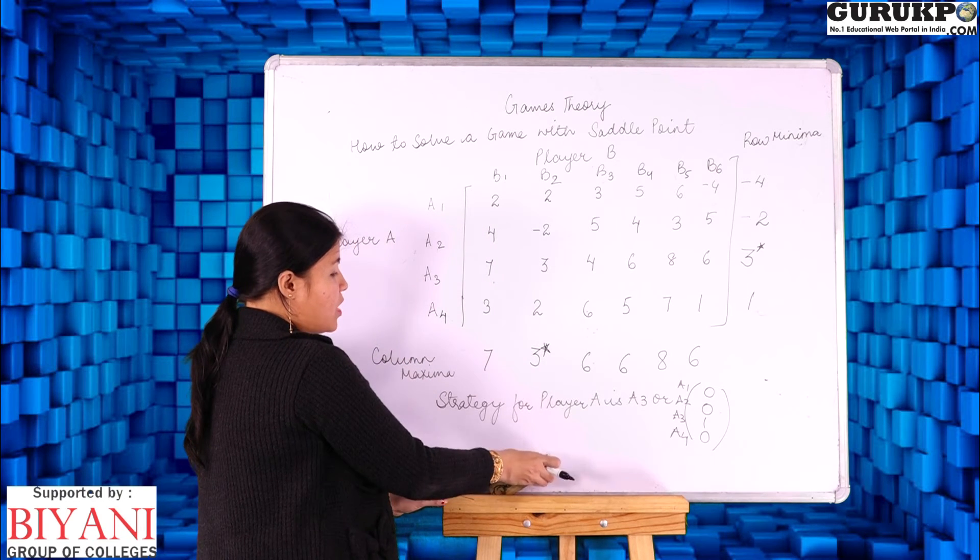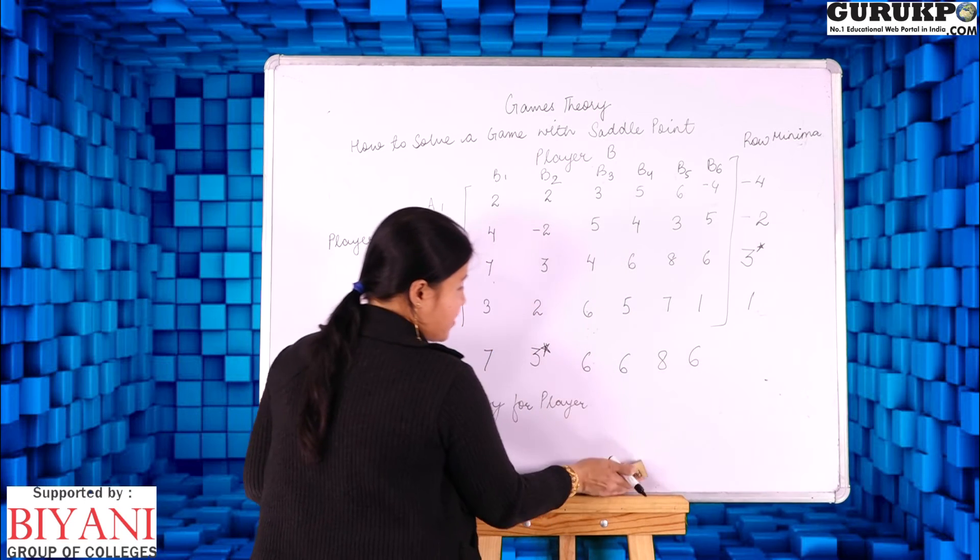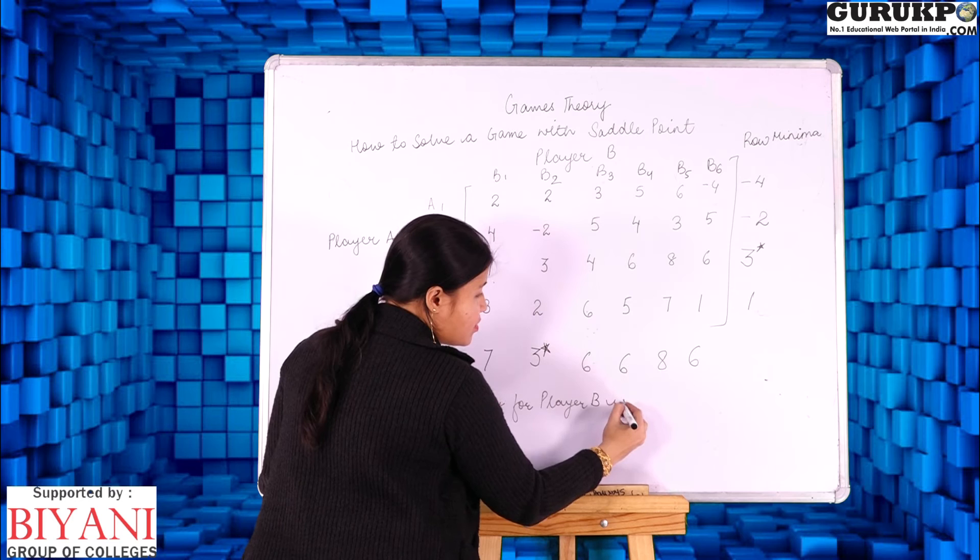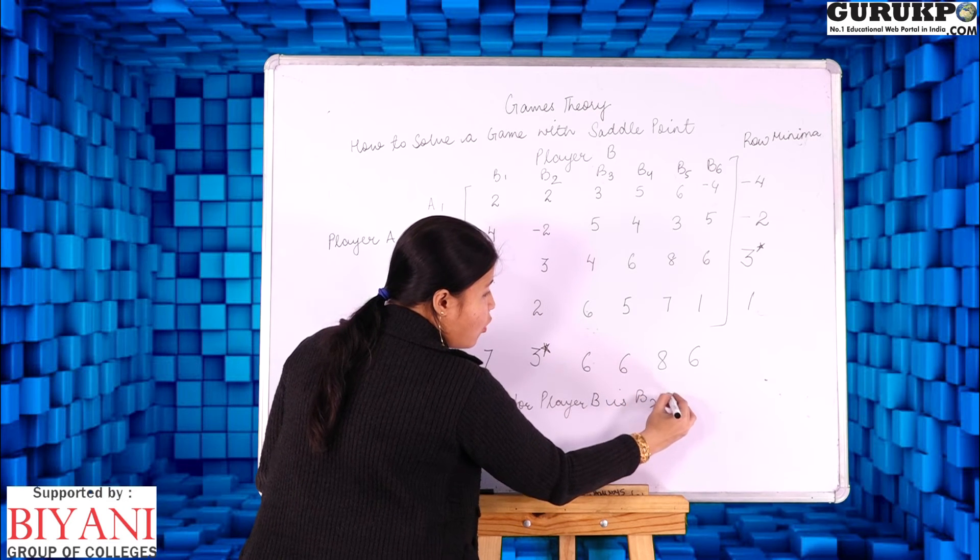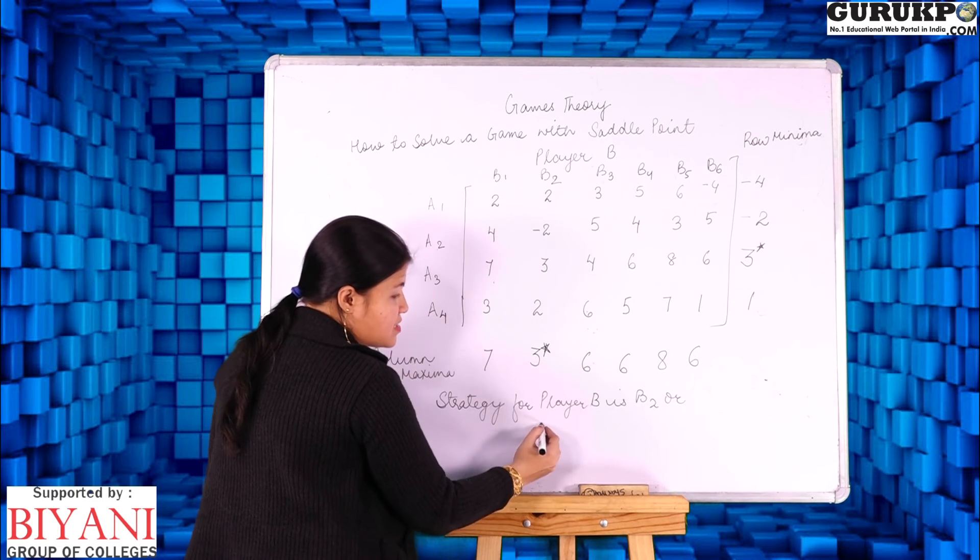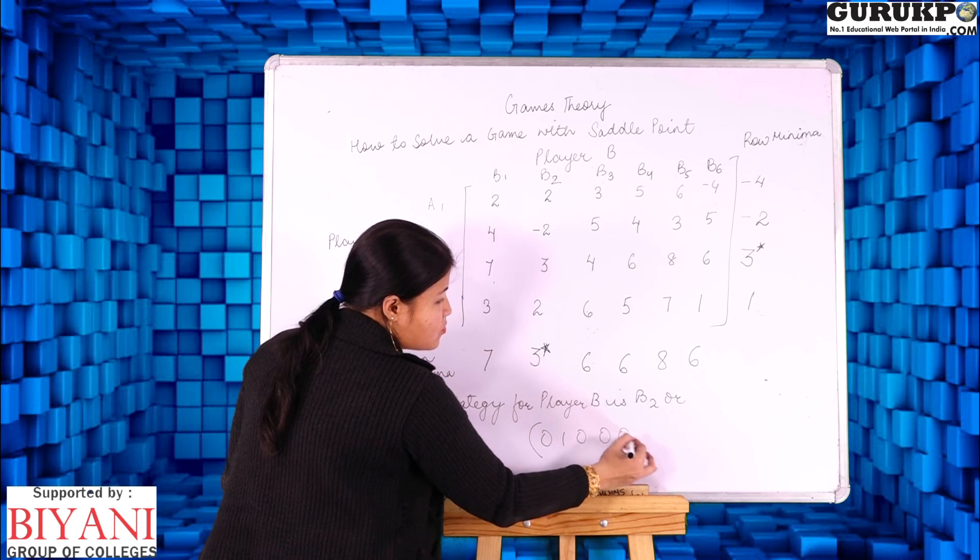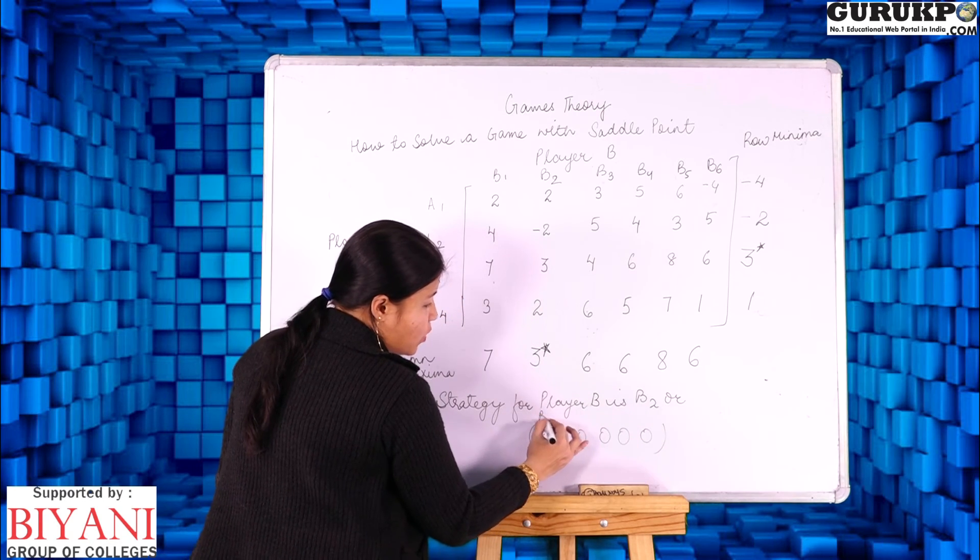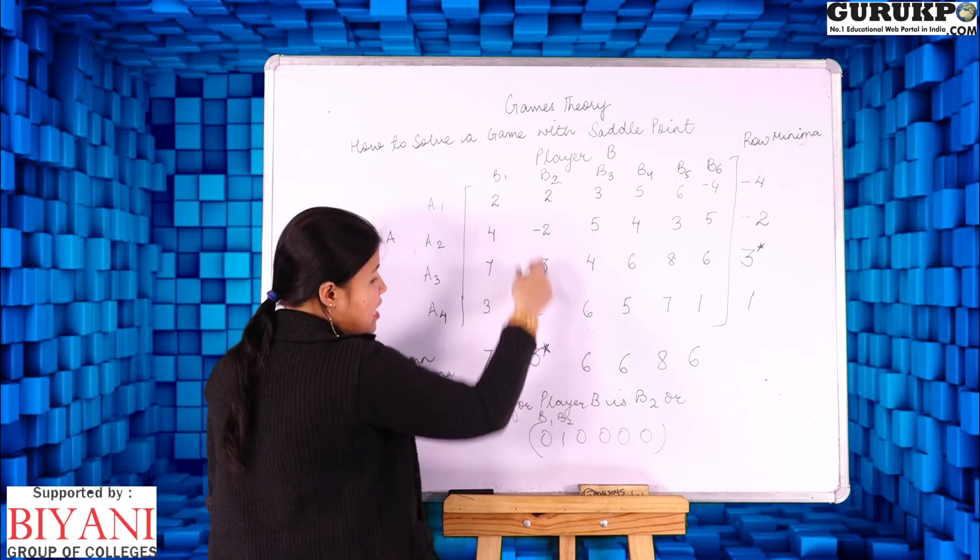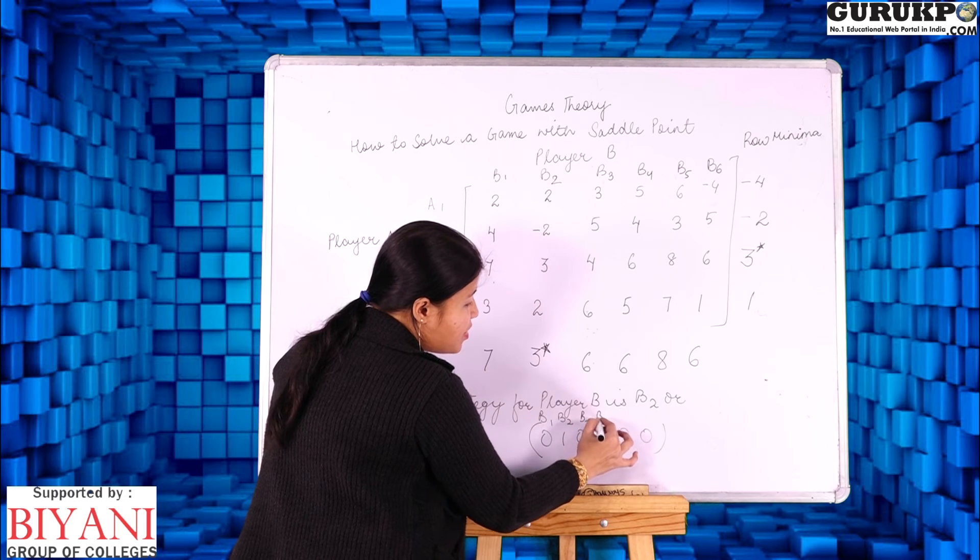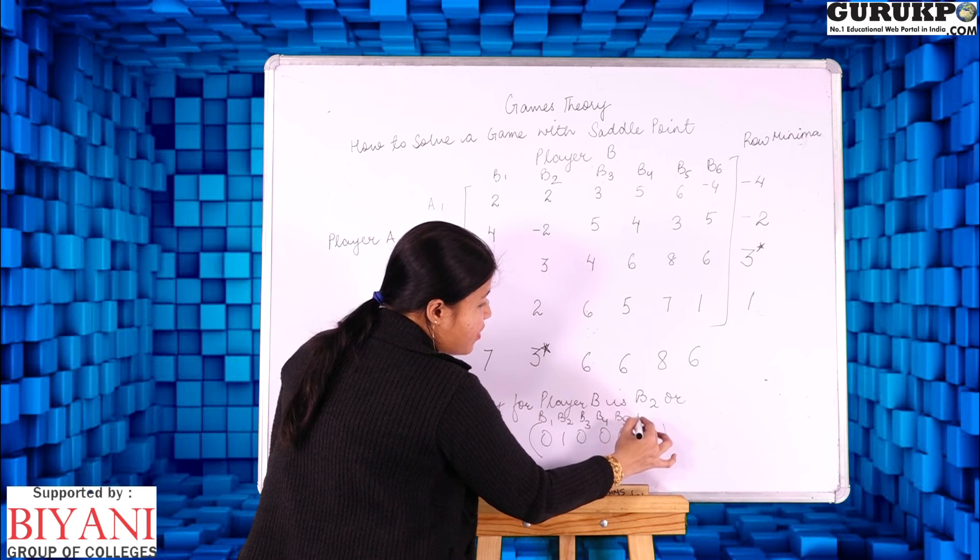In the same way strategy for player B, the saddle point is at B2. So it is B2 or another way to write is 0, 1, 0, 0, 0, 0. That is B1, B2 is the place where there is saddle point so I have indicated here 1, B3, B4, B5 and B6.